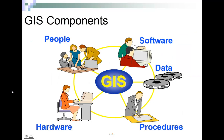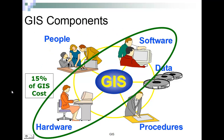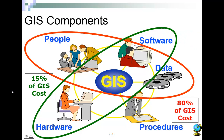When we look at the components of a GIS, the most important components are the people, the data, and the procedures that go about making the actual maps. Software and hardware are very minor components.